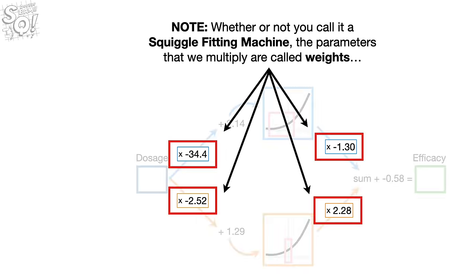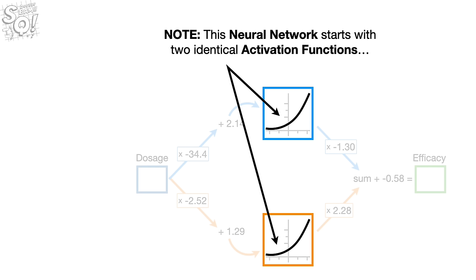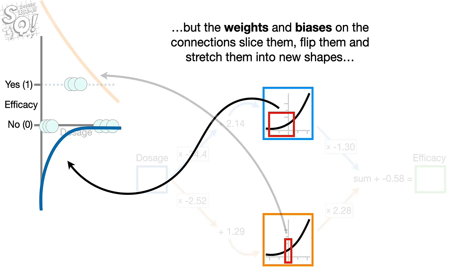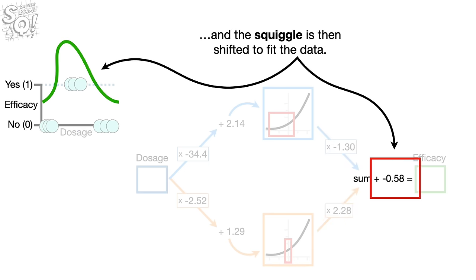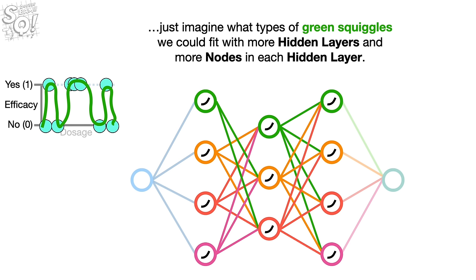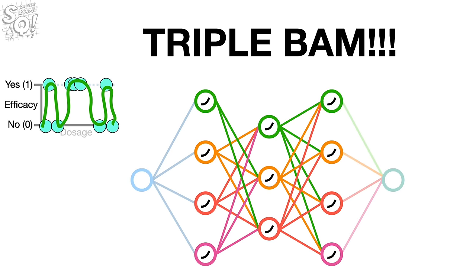The parameters that we multiply are called weights, and the parameters that we add are called biases. This neural network starts with two identical activation functions, but the weights and biases on the connections slice them, flip them, and stretch them into new shapes, which are then added together to get a squiggle that is entirely new, and then the squiggle is shifted to fit the data. If we can create this green squiggle with just two nodes in a single hidden layer, just imagine what types of green squiggles we could fit with more hidden layers and more nodes in each hidden layer. In theory, neural networks can fit a green squiggle to just about any data set, no matter how complicated.